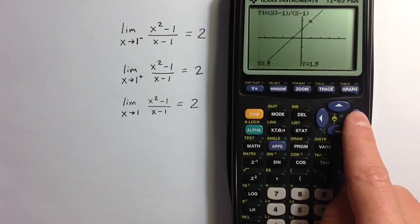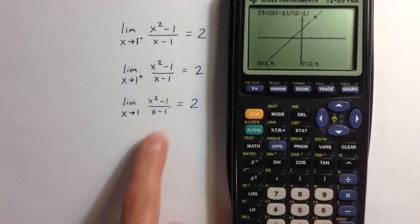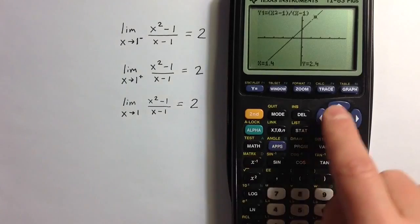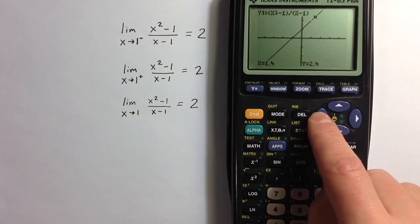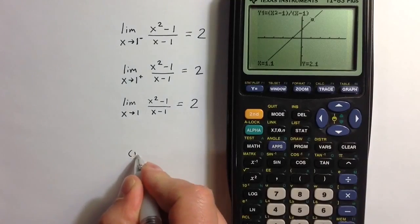But once we get to 1, it's undefined. So there's a hole in the graph of this function. Essentially the graph of this expression is a straight line, but there's a hole in the graph at 1. But as we get closer and closer to that hole, the hole is at the coordinates 1, 2.